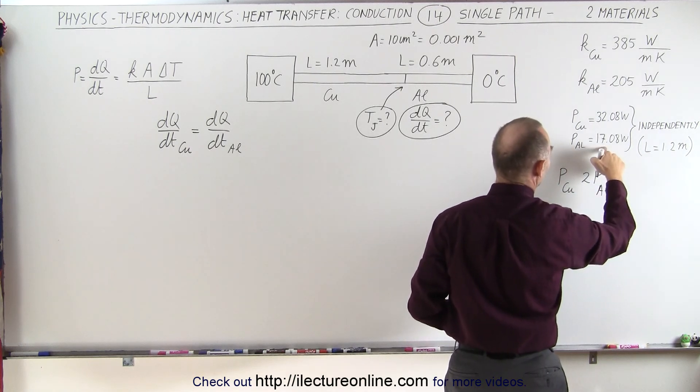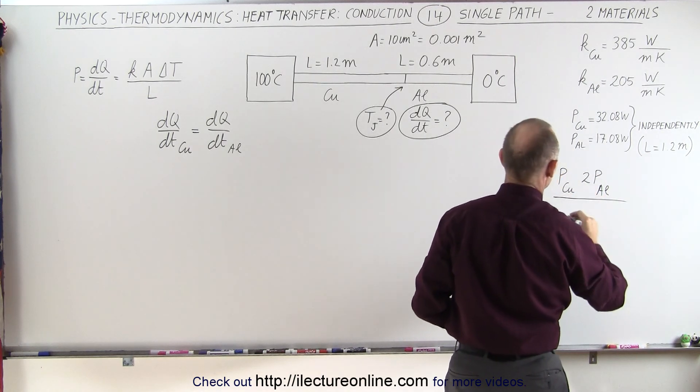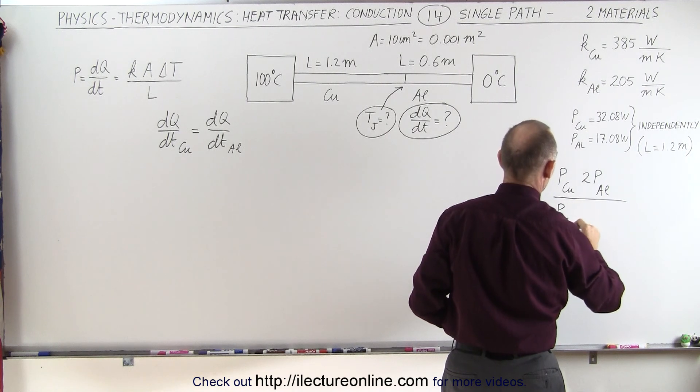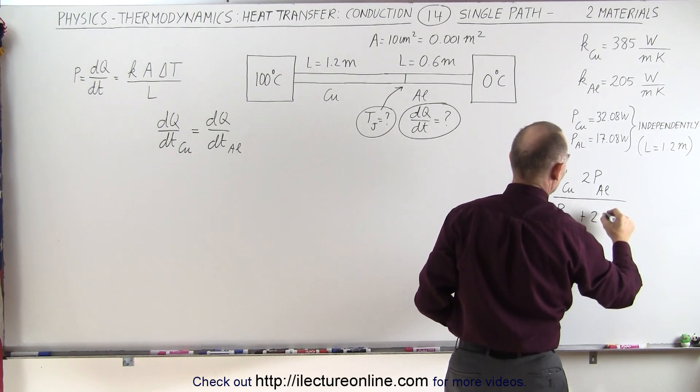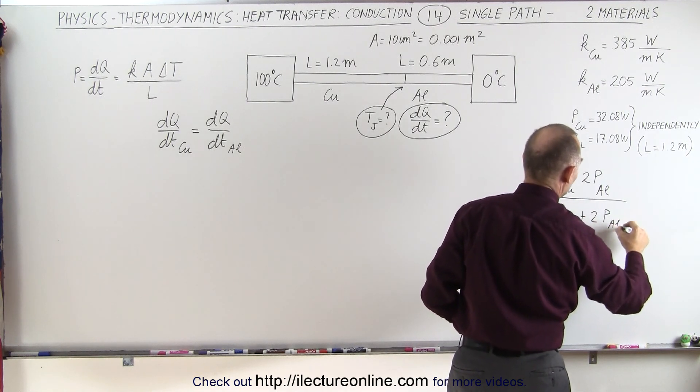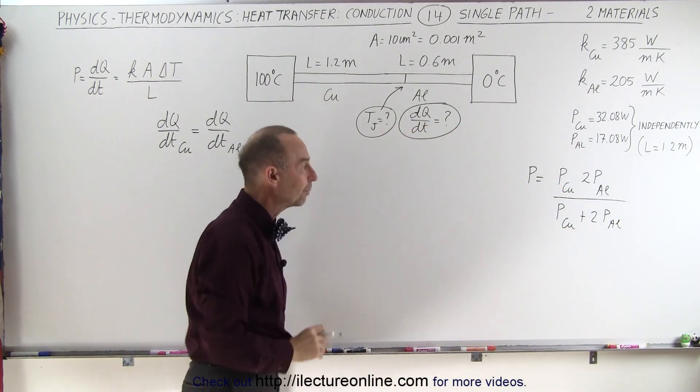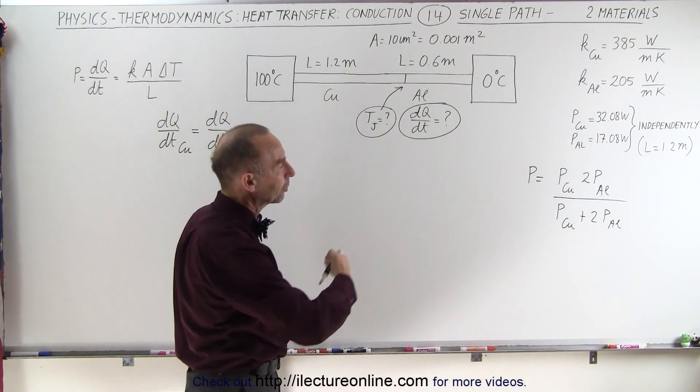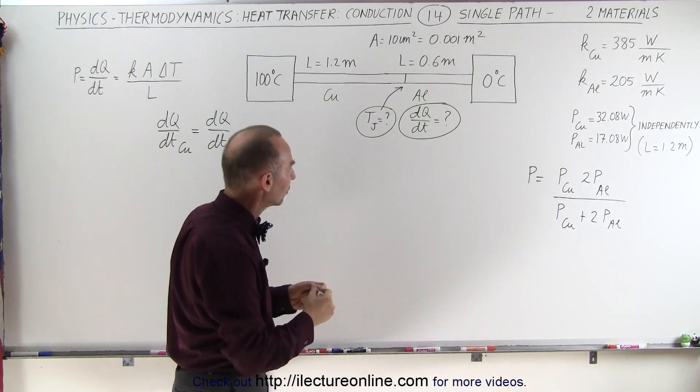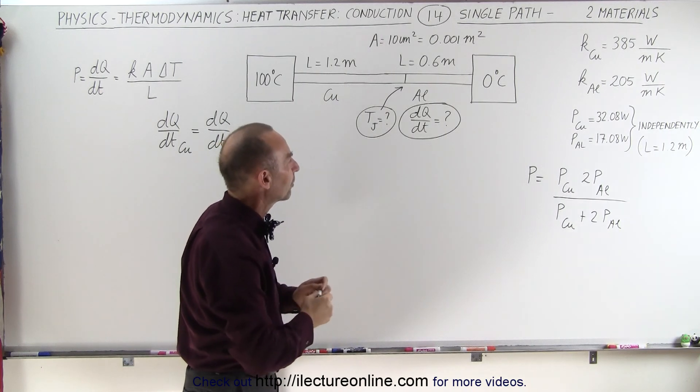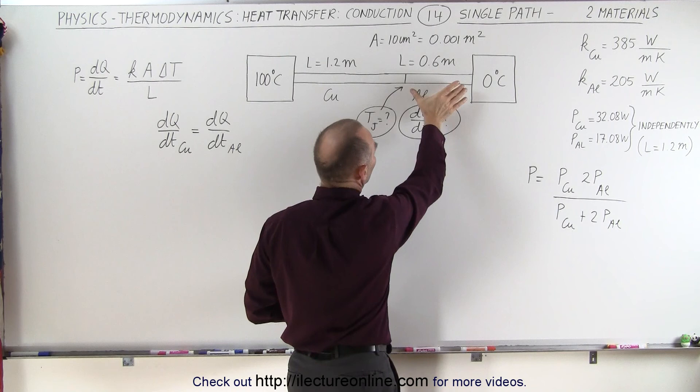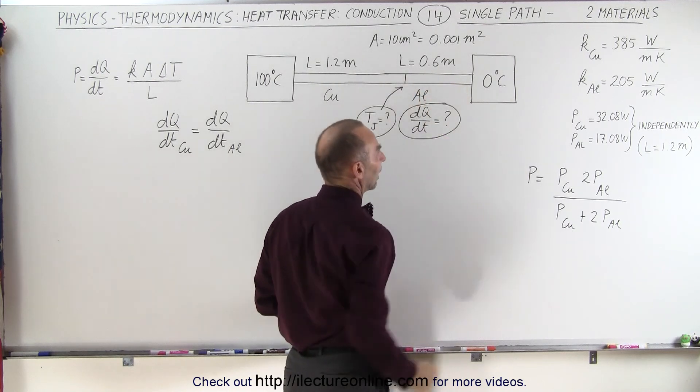If it was a section that was 1.2 meters long divided by the power carried as it was copper plus twice the power carried for the aluminum section. So that should work just as well as it did in the previous video, but now we multiply the aluminum heat conducted by two because the section is only half as long as it was before.